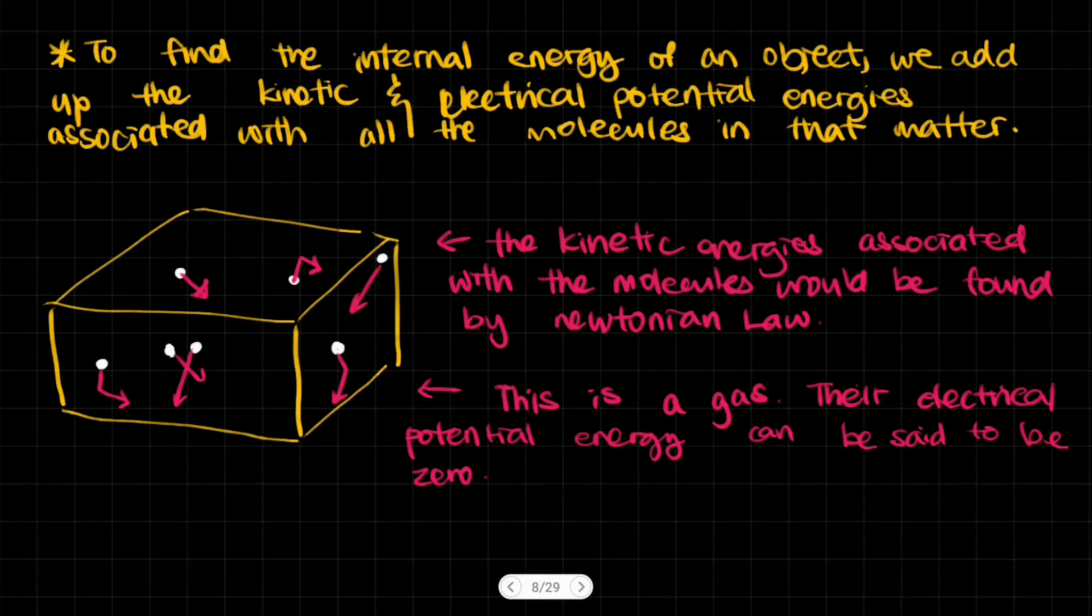So essentially, this is a gas and their electrical potential energy can be said to be zero because they're so far away from each other that their electrical potential energy will very much approach zero, zero joules.